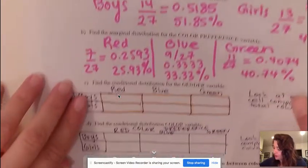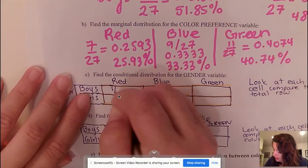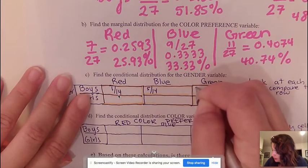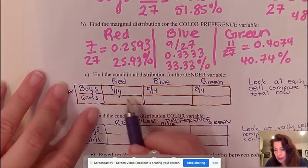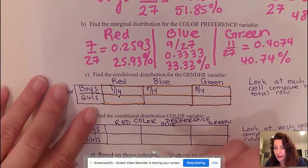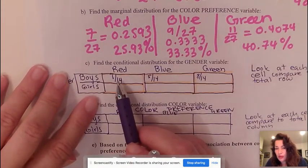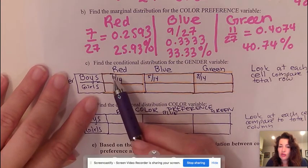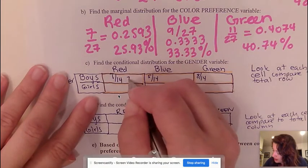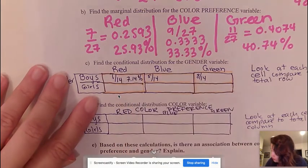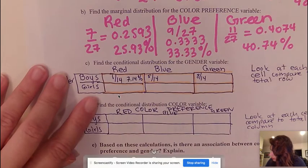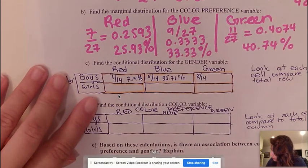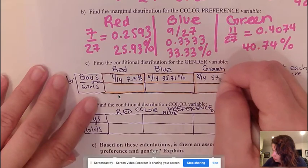So I can actually just rewrite it here as 1 out of 14, 5 out of 14, and 8 out of 14. These numbers don't really mean anything until I convert it to a percentage. But notice when you add all this up it adds up to 14 out of 14 which is 100%. So 1 out of 14 in percentage is 7.14%, 5 out of 14 in percentage is 35.71%, and 8 out of 14 in percentage is 57.14%.